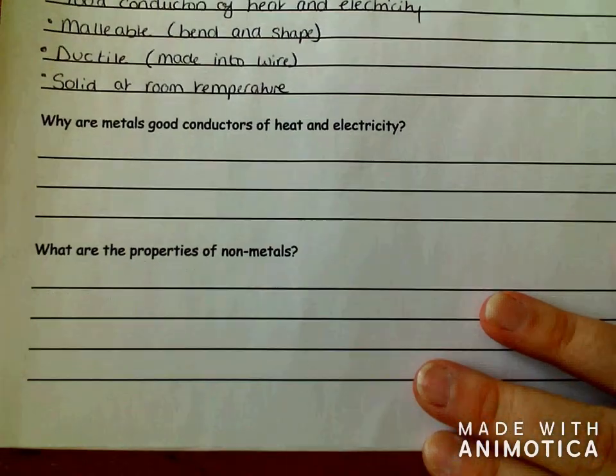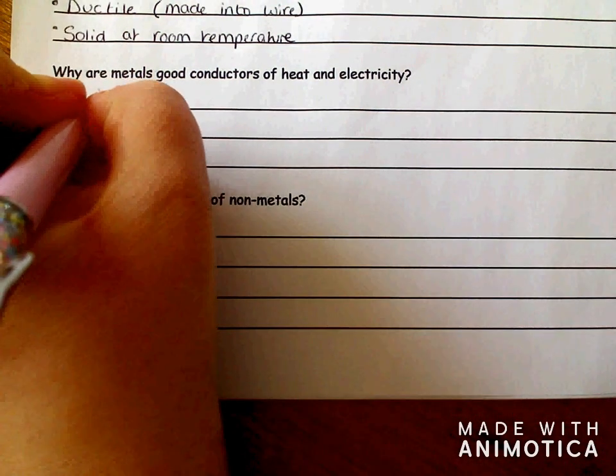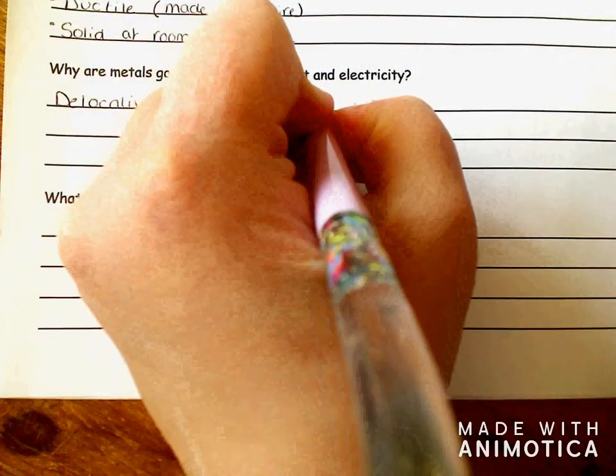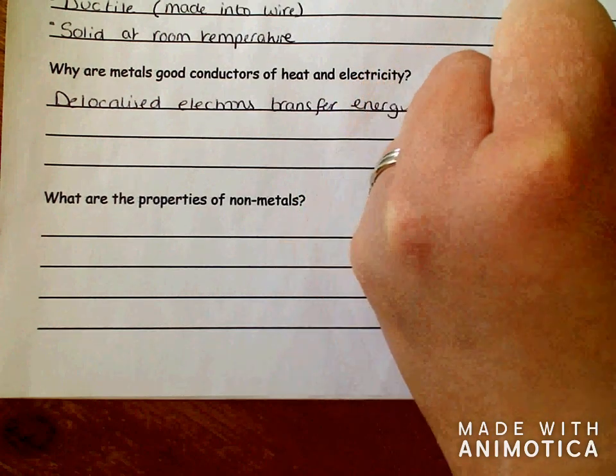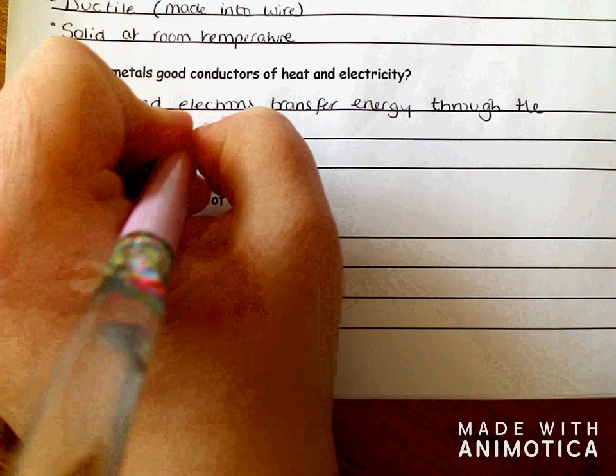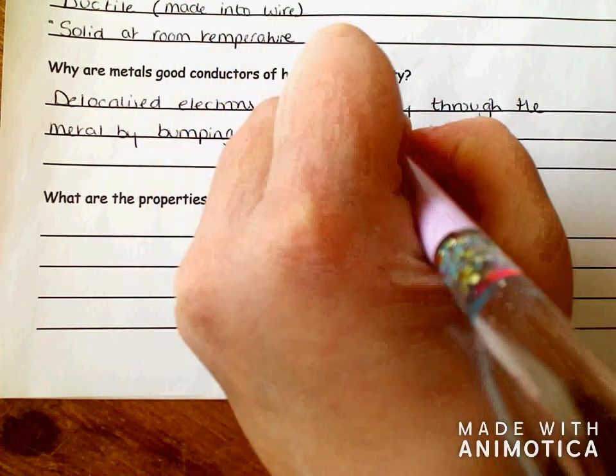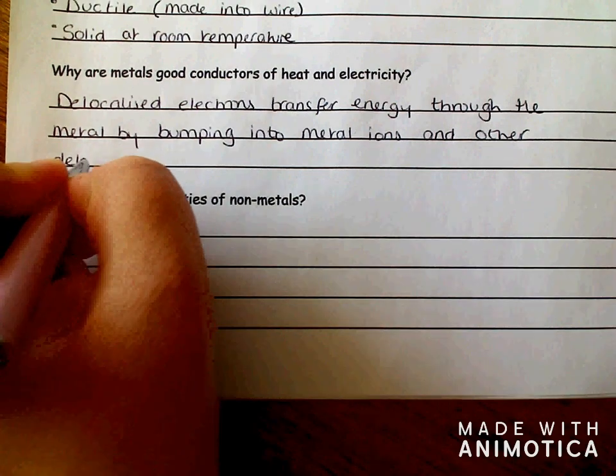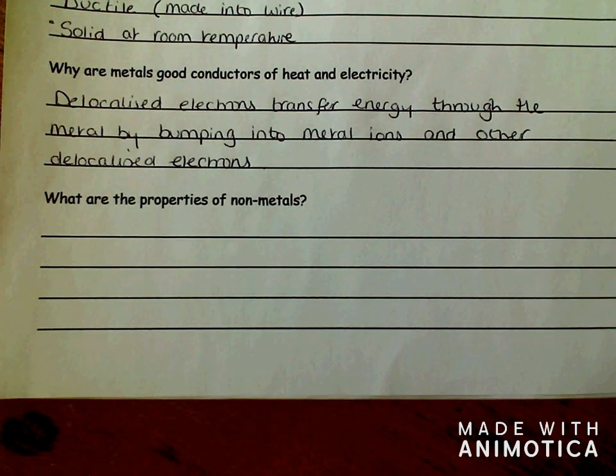Next question. Why are metals good conductors of heat and electricity? Please write. Delocalized electrons transfer energy through the metal by bumping into metal ions and other delocalized electrons.